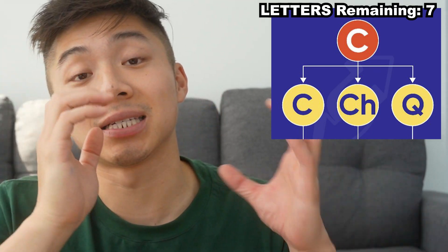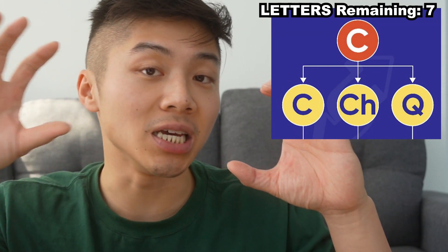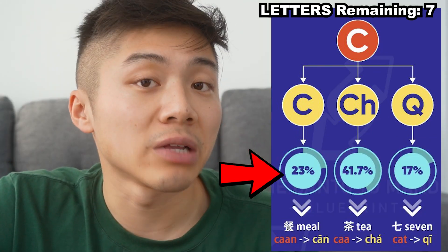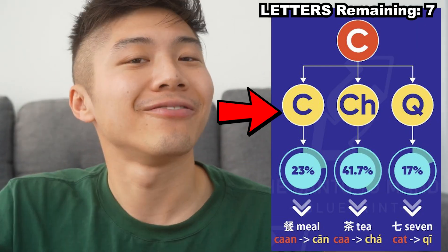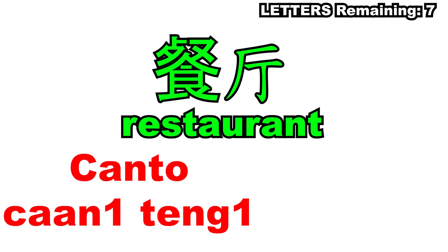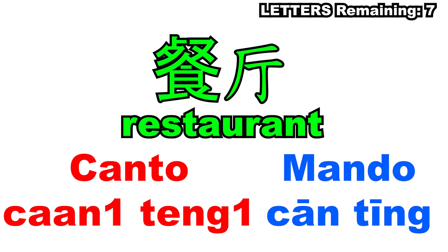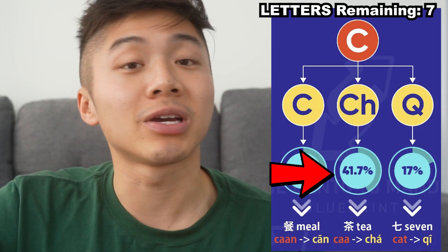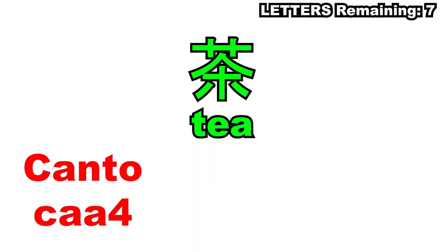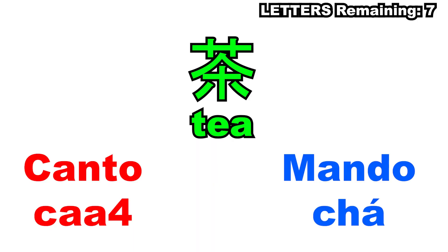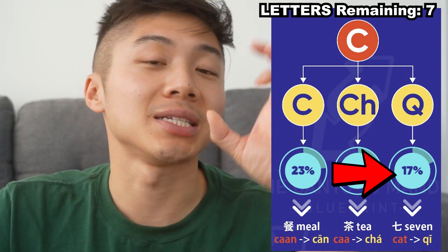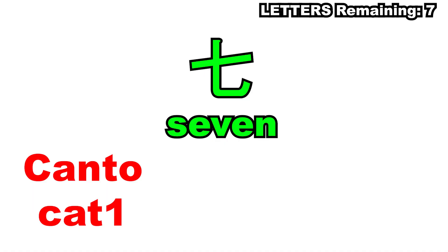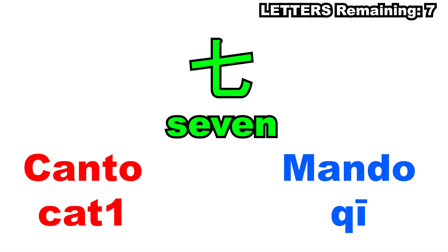Next we have C, which can become C, CH, or Q. About 23% of the time the C will remain C — for example 'chan ting' in Mandarin stays 'chan'. Most of the time that C will become CH — so 'cha' for tea becomes 'cha' in Mandarin. And sometimes, about 70% of certain cases, that C will become Q — so 'chat' for seven becomes 'qi'.